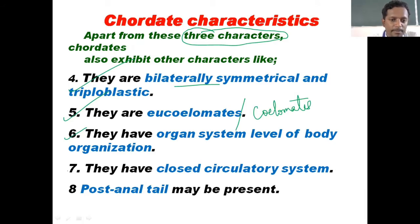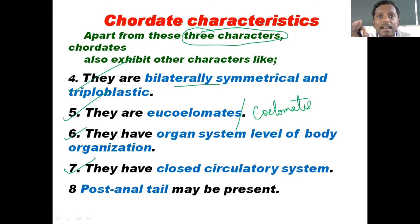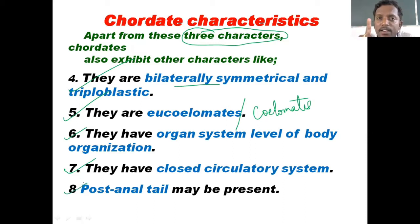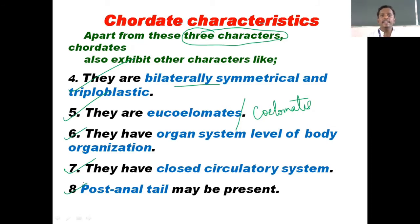All chordates have a closed type of circulatory system, meaning they all have well-formed blood vessels. Finally, if a tail is present — as in dogs, elephants, snakes — the tail will be present after the anus, forming the post-anal part. These are the other general characters or salient features of Phylum Chordata. You can pause, take a screenshot, and write them neatly. I'll move to the next slide.